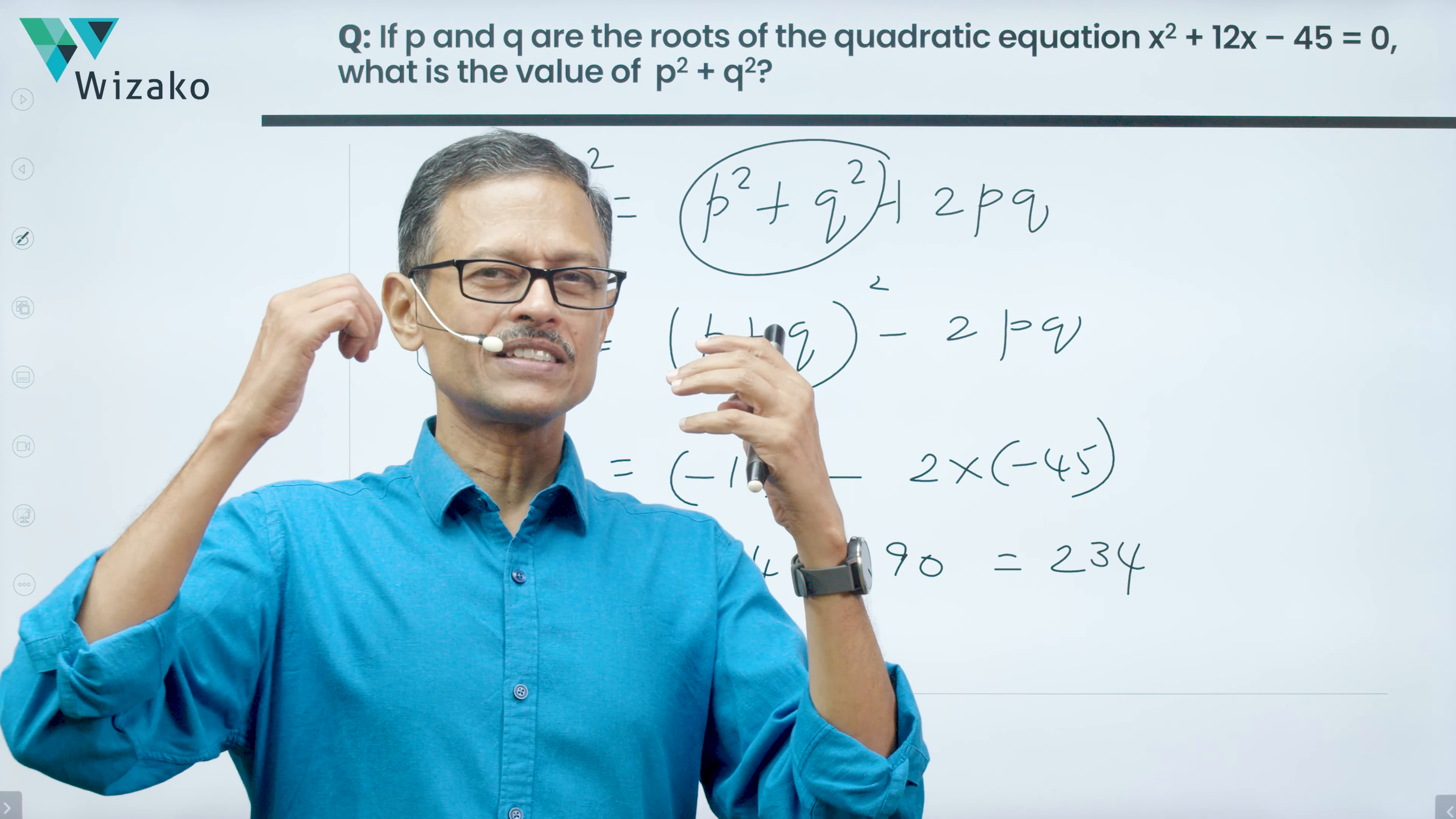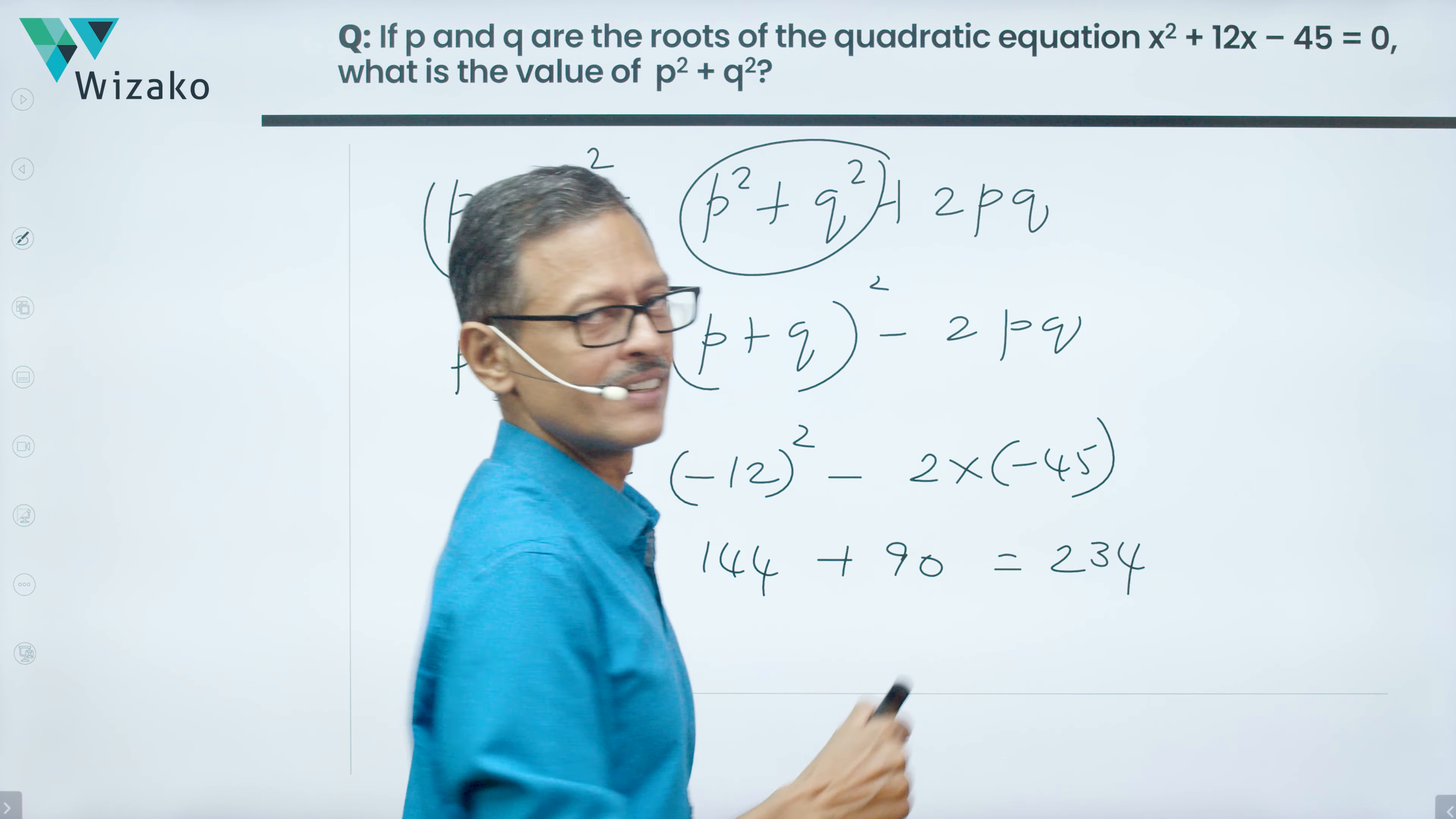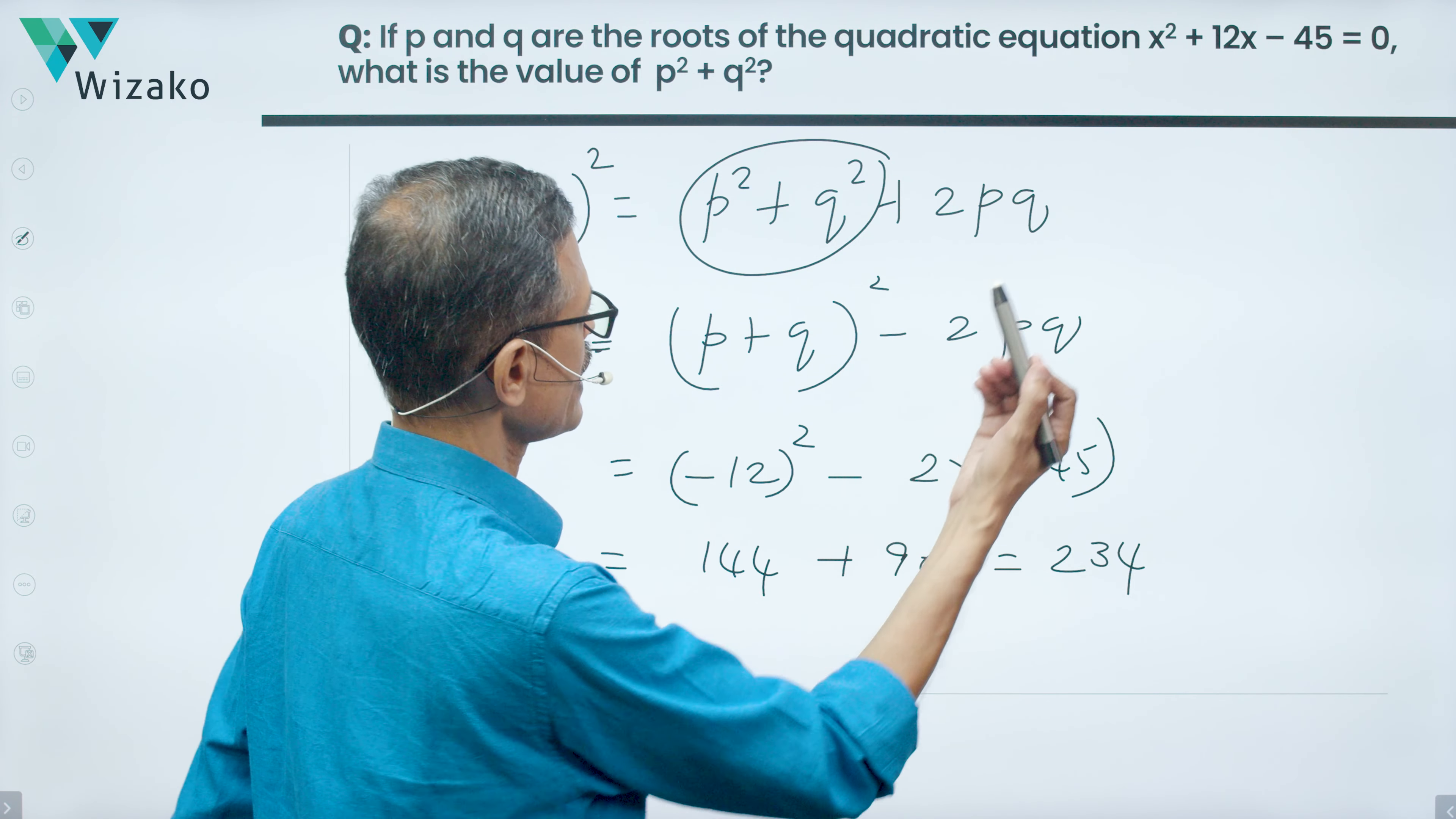The first method was obviously way simpler than what we did here. Why the second method at all? The second method makes sense in cases where you can't factorize and find out the roots as easily as we did right now, or if the value of the roots end up being irrational numbers or imaginary numbers. For example,